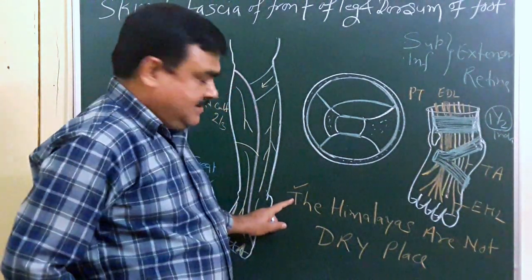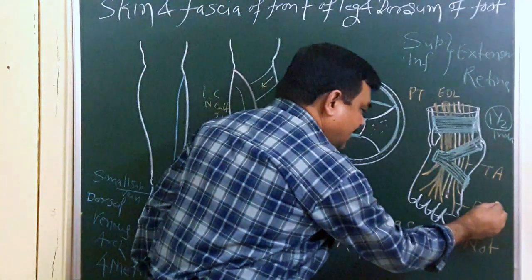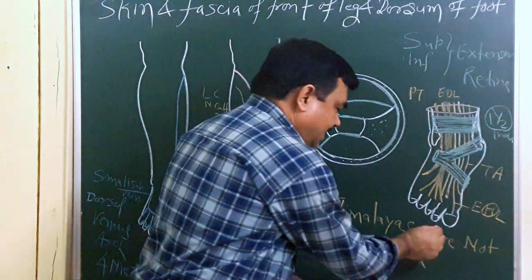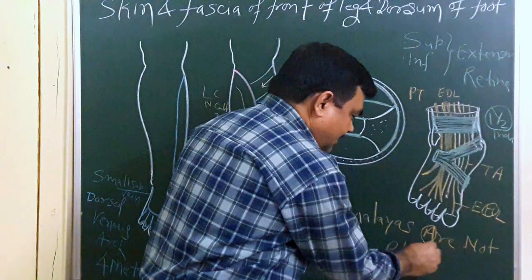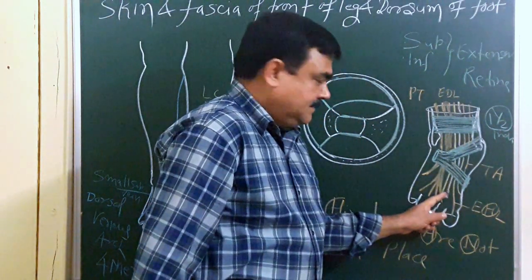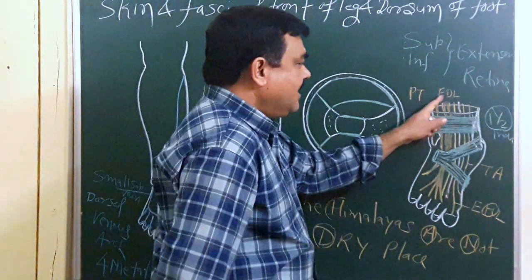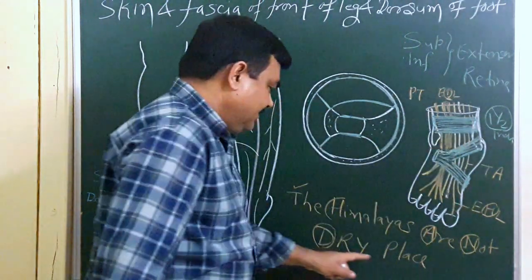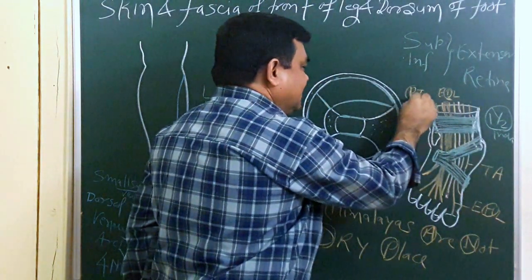To recap: T — tibialis anterior, A — anterior tibial artery, N — not, for deep peroneal nerve, D — for extensor digitorum longus, and P — for peroneus tertius. This mnemonic helps recall all structures passing under the extensor retinaculum from medial to lateral.